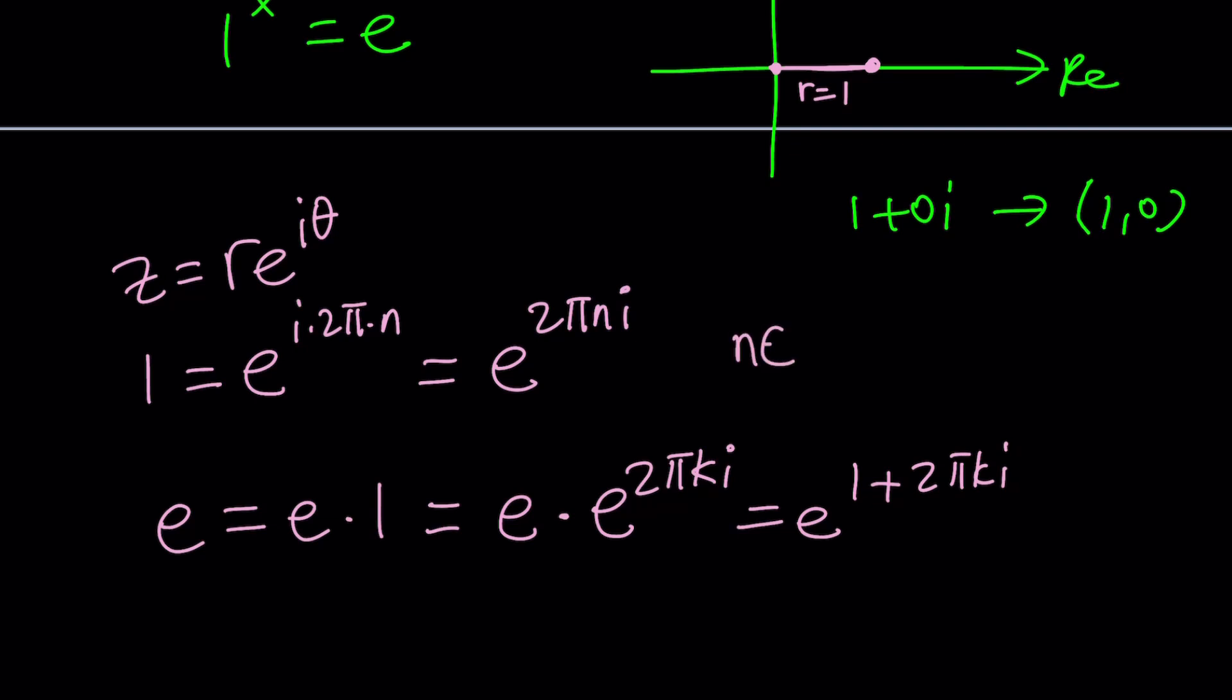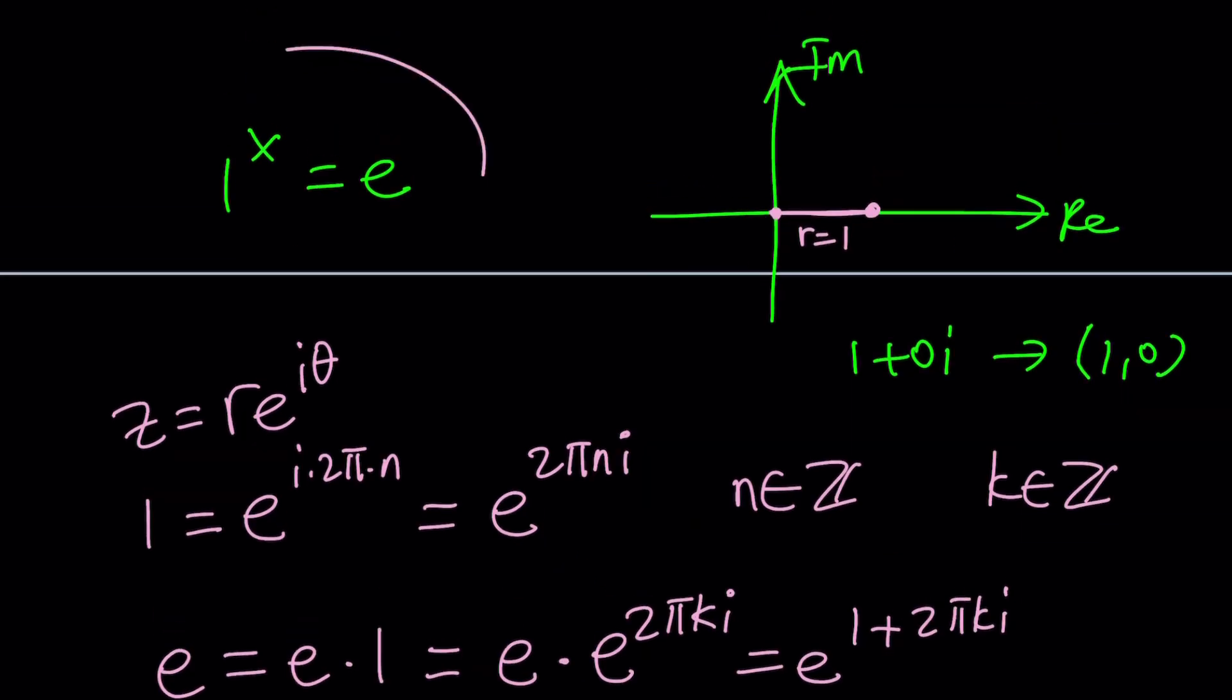k and n are integers, by the way. If I forgot to say, those are going to be integers, positive and negative. Make sense? So we complexified both sides. Let's plug these into our equation, which is 1 to the power x equals e, which does not seem to have a solution in the real world.